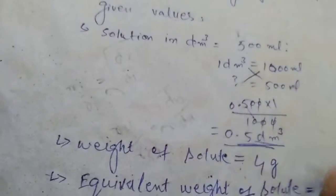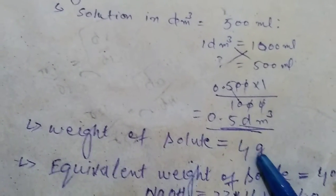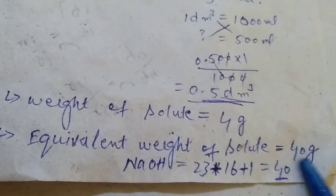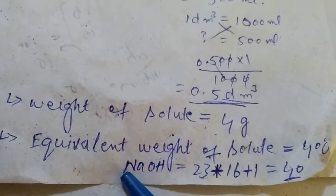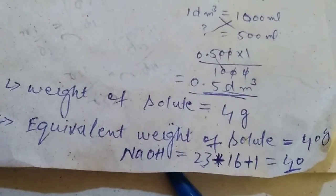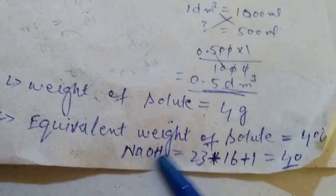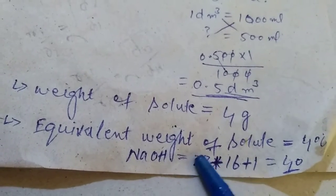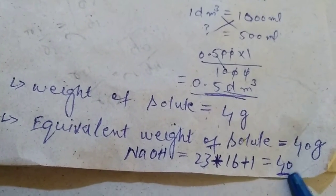The weight of the solute is 4 grams. The equivalent weight of the solute (NaOH) equals its molar mass: sodium is 23, oxygen is 16, and hydrogen is 1. Adding these values together, the molar mass of NaOH is equal to 40 g/mol.